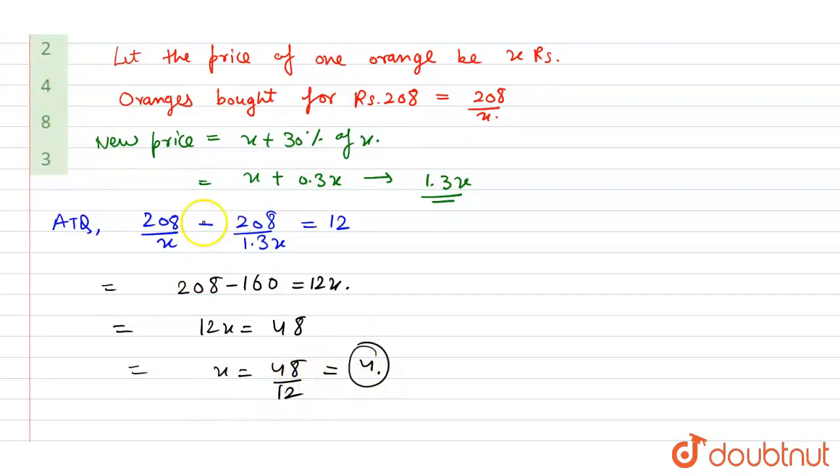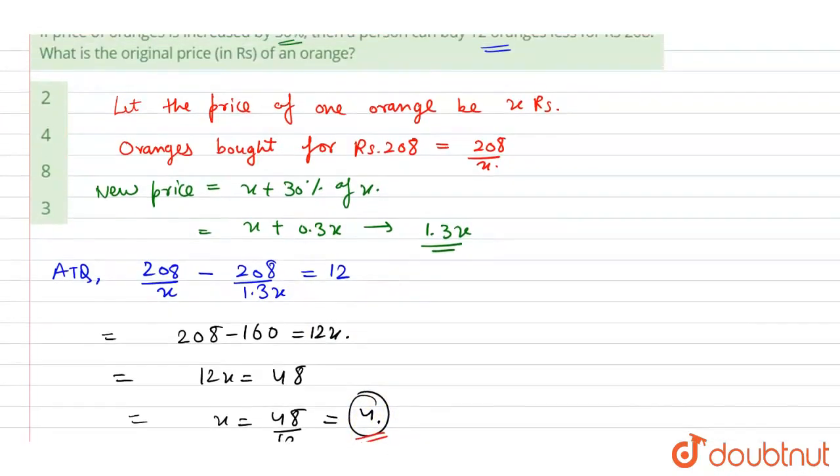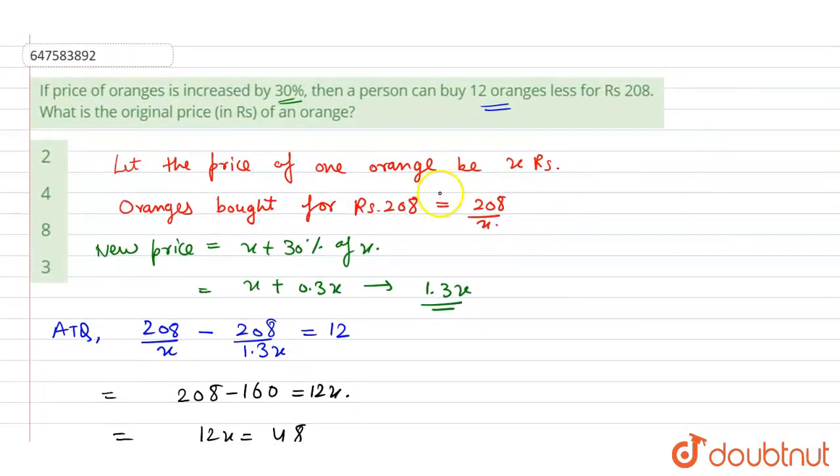My answer is 4. That means the original price in rupees of an orange is 4 rupees. Option 2 is correct. Thank you.